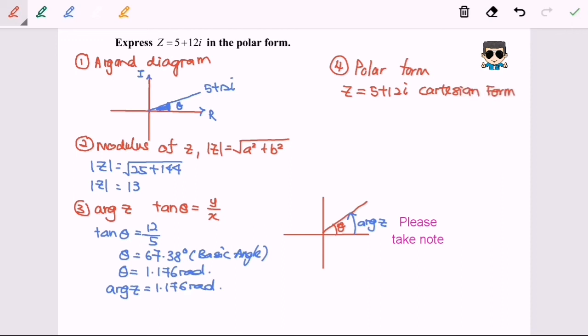So for the polar form, it will be 13 cos 1.176 plus i sin 1.176. So here we are and thanks for watching.